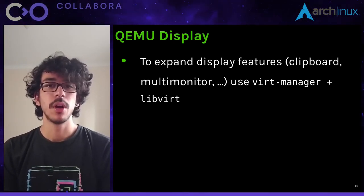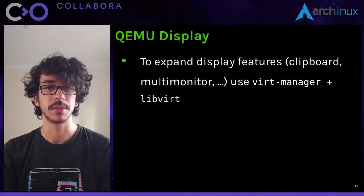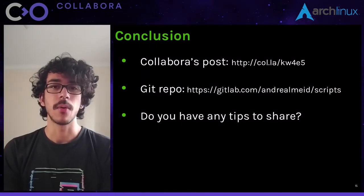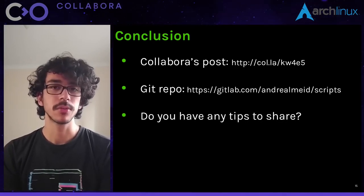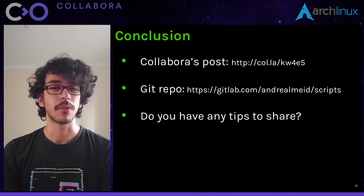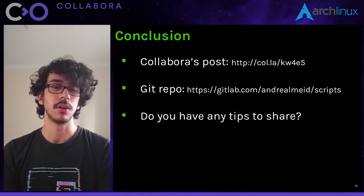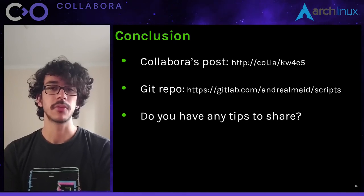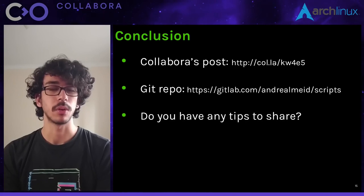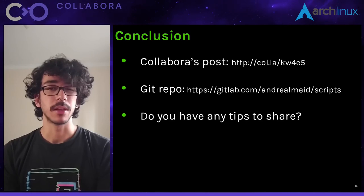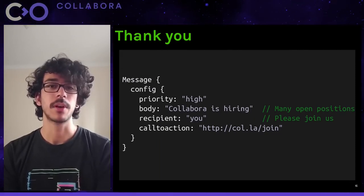If you want shared clipboard or multi-monitor support, I recommend using VirtManager, which is a front-end for QEMU with LibVirt, and gives you a very nice graphical experience. That's it — this is how I spawn new virtual machines for testing, share files with my virtual machine, and run graphical applications. As you can see, it requires almost no new programs; everything is a command line application, so it's very easy to create batch scripts. Here is the link for a git repository where I store my scripts, and also a link to a blog post at the Collabora website with a more detailed explanation. Thanks for watching — I'd love to hear if you also have tips for your kernel development workflow!